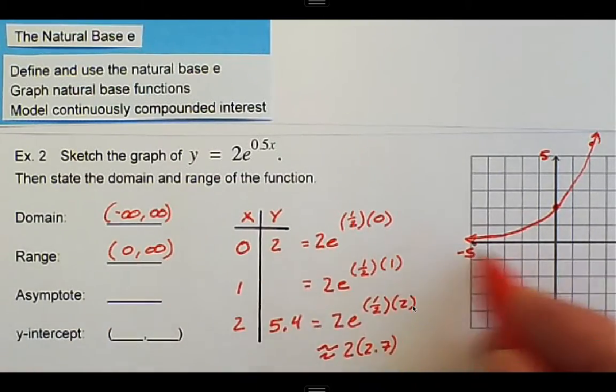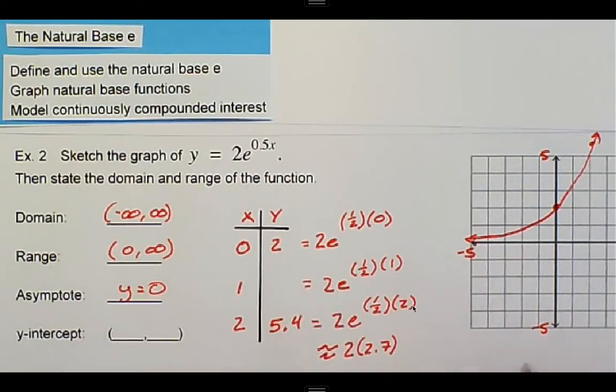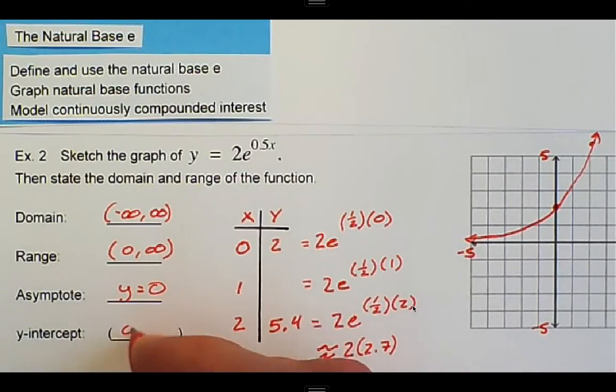Our asymptote is the x-axis, which is y = 0. And the y-intercept is the point (0, 2).